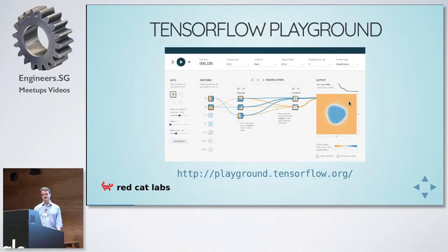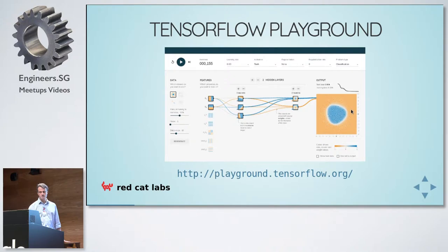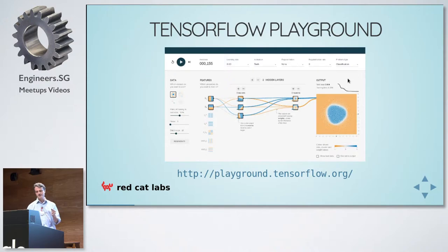If you want to understand how this all works, there's a thing called the TensorFlow Playground, which is great fun to play with at playground.tensorflow.org. This allows you to set some features on one side and try to classify points into blue and orange on the other side. You can add different numbers of neurons within a layer or different numbers of layers. Press the play button and it will train — you can see it converge or not. A very nice little example.